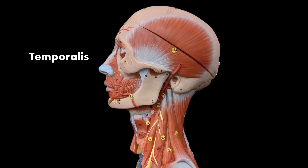Let's look at another example using the temporalis muscle. The temporalis has an origin up on the skull and the insertion on the coronoid process of the mandible, so it's crossing the temporomandibular joint. If this insertion pulls back toward the origin, that's going to pull the whole mandible upward — we call that elevating the mandible, also known as closing your jaw.